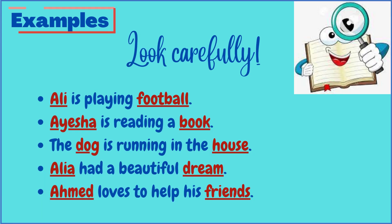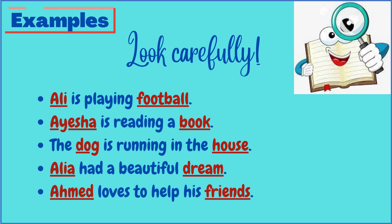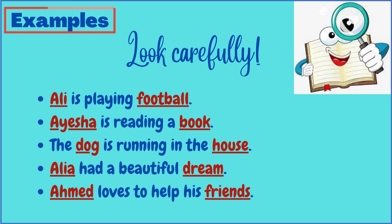Let's have a look at these examples — the nouns have been highlighted and underlined. The first one is 'Ali is playing football.' In this example there are two nouns: Ali and football. Ali is the name of a person and football is the name of a thing. The next example is 'Aisha is reading a book.' Again two nouns can be identified: Aisha, name of a person, and book, name of a thing.